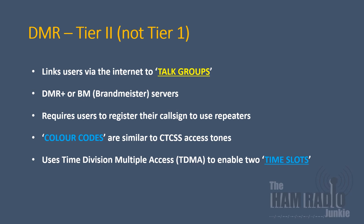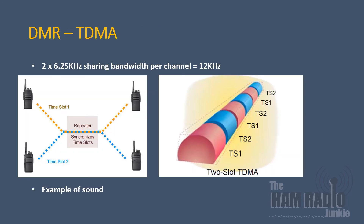Operators will also notice that colour codes are used and these are very similar to CTCSS tones on repeaters. The difficult part of DMR is that it uses time division multiple access, or TDMA, to enable two time slots. On analogue, we normally have a bandwidth of 12 kHz. But with DMR and some other modes, we have two 6.25 kHz shared bandwidth, giving 12 kHz, but it's separated into two time slots — time slot 1 and time slot 2. So what does this mean for the radio amateur? You can have two people on the same frequency transmitting and receiving at exactly the same time, one using time slot 1 and one on time slot 2. For this reason, some talk groups operate on time slot 1 and some on time slot 2.